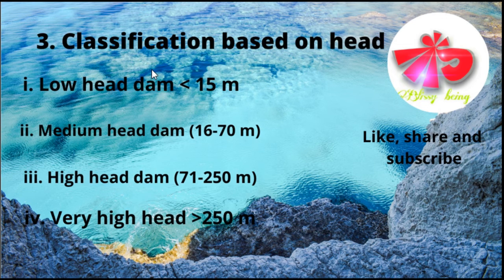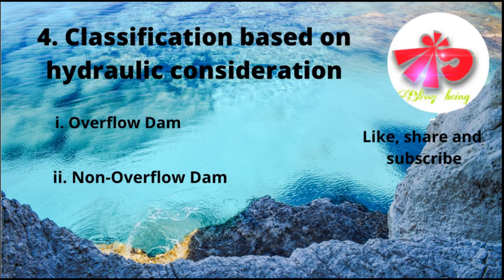The third basis of classification is by head. Dams are classified as: first, low head dam, having a head of less than 15 meters; second, medium head dam, having a head ranging from 16 to 70 meters; third, high head dam, having a head ranging from 71 to 250 meters; and fourth, very high head dam, having a head greater than 250 meters.